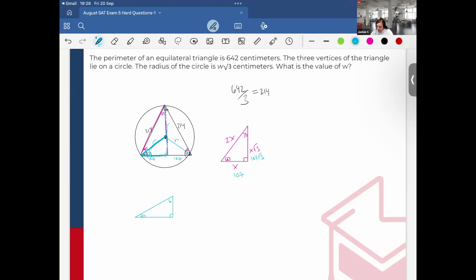This is x, this is x root 3, and the radius which I want to find is equal to 2x. So I know that x root 3 in this case is equal to 107. To get x, I'm going to divide each side by root 3. I'm going to rationalize out the denominator by multiplying the top and bottom by root 3. This will just simplify to 107 root 3 over 3. So that's what x is equal to.